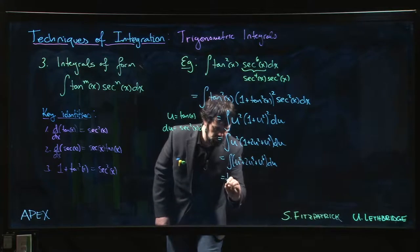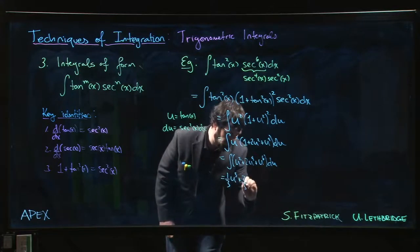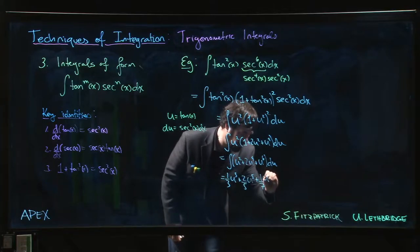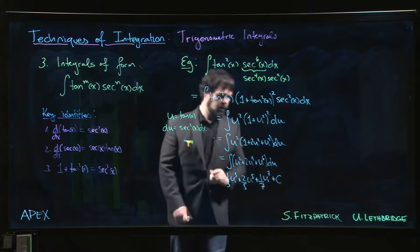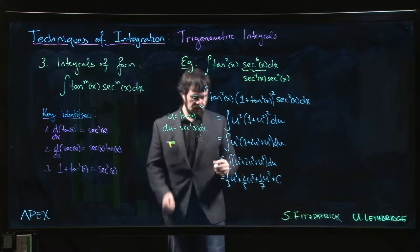We have 1 over 3 u cubed, 2 over 5 u to the 5, 1 over 7 u to the 7. And all that's left to do is put back that u is equal to tan x.